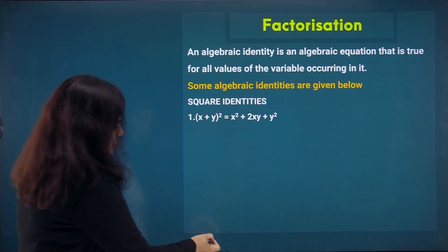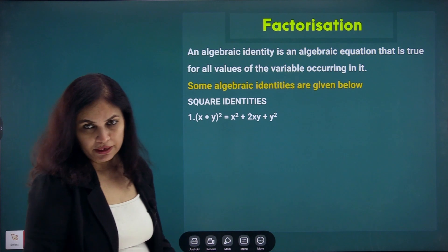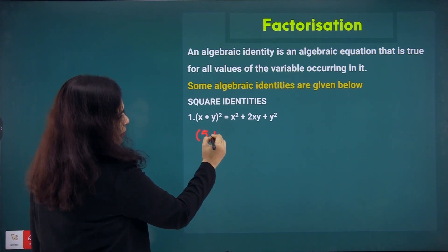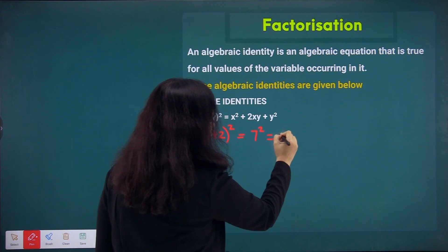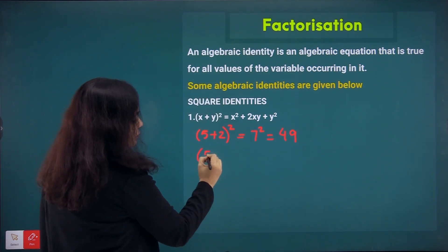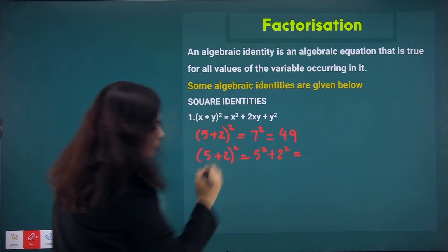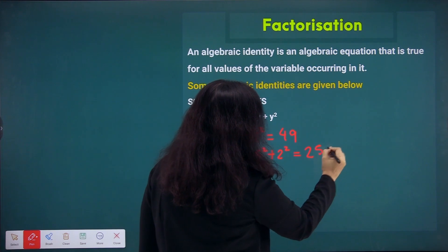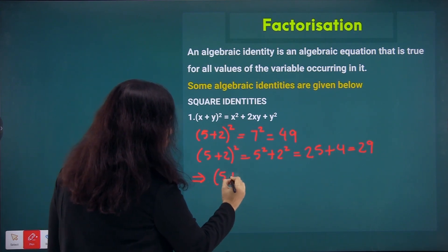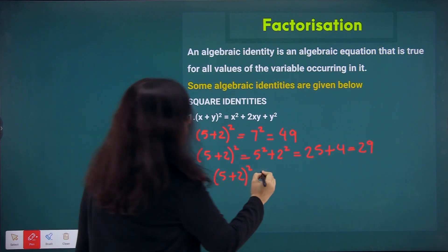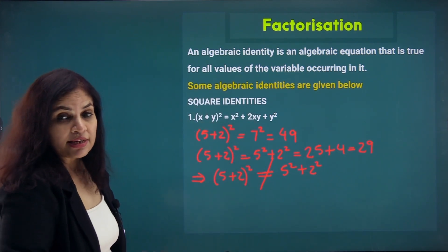The common mistake: if I ask you what is (5+2)², it will be 7² = 49. But if you write (5+2)² = 5² + 2², is it giving you 49? No — it gives you 25 + 4 = 29. Therefore, (5+2)², the square of the sum, is not equal to 5² + 2², the sum of squares.